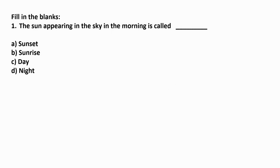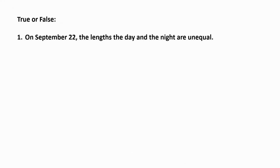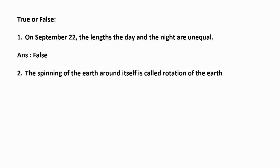Filling in the blanks: The sun appearing in the sky in the morning is called — what is it called? The answer is sunrise. The whole day has how many hours? The answer is 24 hours. True or false: On September 22nd, the day and the night are unequal — the answer is false. The spinning of the Earth around itself is called the rotation of the Earth — the answer is true.